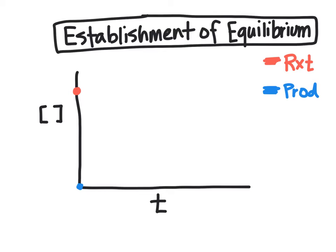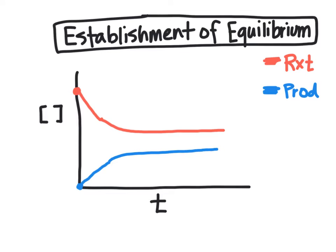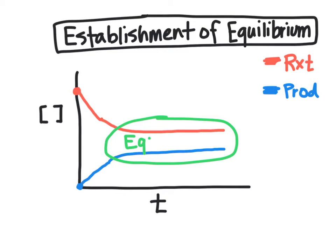At the beginning of any reaction you have a high concentration of reactants and a low concentration of products. As you start the reaction, the concentration of reactants is going to start to decrease because you're using them up, while the concentration of products will start to increase. However, in an equilibrium reaction, over time that change flattens for both the reactants and the products. You'll notice the reactants and products don't have the same concentration at equilibrium, but their concentration is unchanging over time.